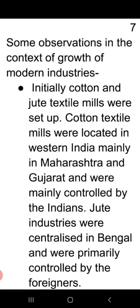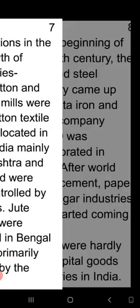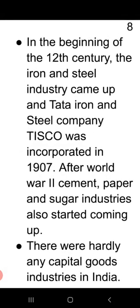Initially, cotton and jute textile mills were set up — cotton mills were located in western India, mainly Maharashtra and Gujarat, while jute industries were centralized in Bengal where foreigners could maintain full control. In the early 20th century, the iron and steel industry came up, and Tata Iron and Steel Company (TISCO) was incorporated in 1907. After World War Two, cement, paper, and sugar industries also started flourishing in India.